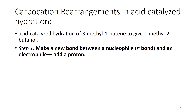Similar to what happened in the previous video with hydrogen halide addition, a rearrangement can also happen in the acid-catalyzed hydration. If we start with 3-methyl-1-butene, what will happen first is similar to the previous steps — we make a new bond between the nucleophile and the electrophile. If it reacts with hydronium ion, the double bond acts as a nucleophile and the hydronium acts as the electrophile.